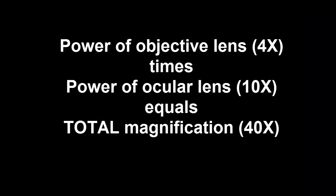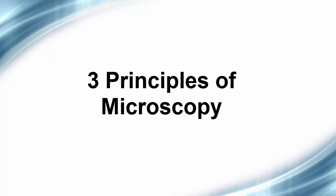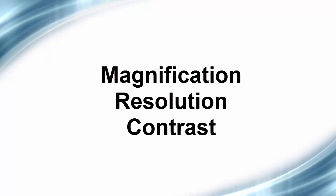Later, you'll learn to use this information to record the total magnification of your specimen by multiplying the magnifying power of the objective lens times the magnifying power of the ocular lens. The three principles of microscopy are magnification, resolution, and contrast.